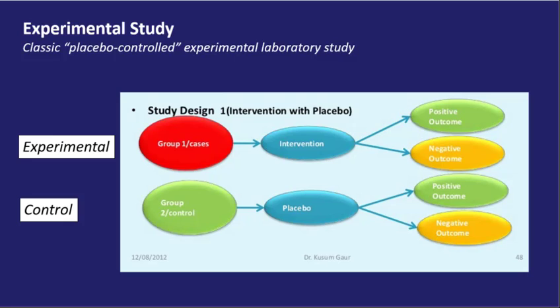Upon receiving or not receiving the drug, there are four possible outcomes — a positive or negative outcome for each of the control and experimental groups. By positive outcome, we mean that the intended effect of the drug occurred; for example, reduced hypertension for a drug intended to lower blood pressure. By negative outcome, we mean that the intended effect of the drug did not occur. A positive or negative outcome can occur for participants in either group, hence four possible outcomes.